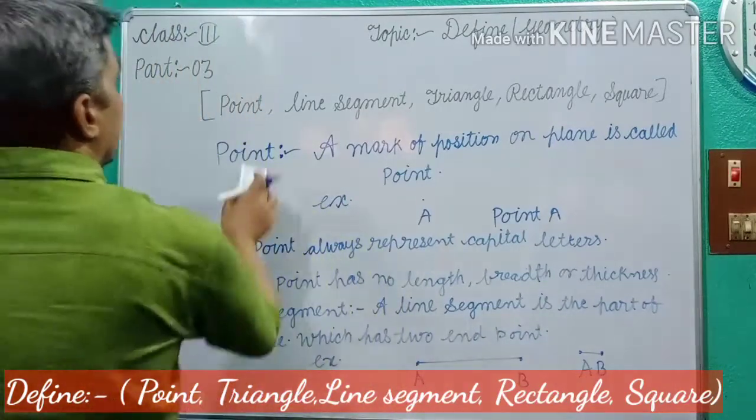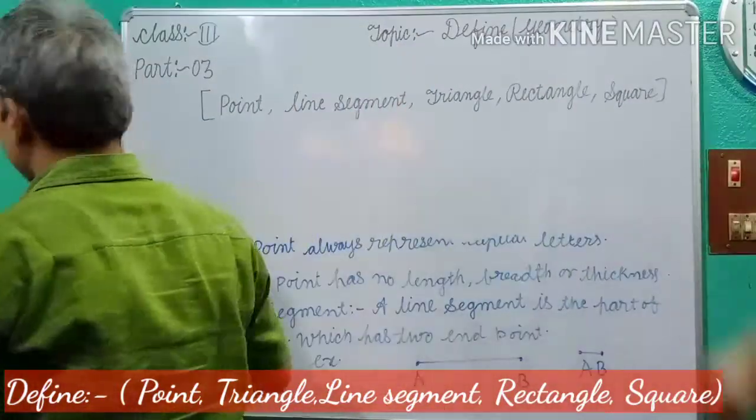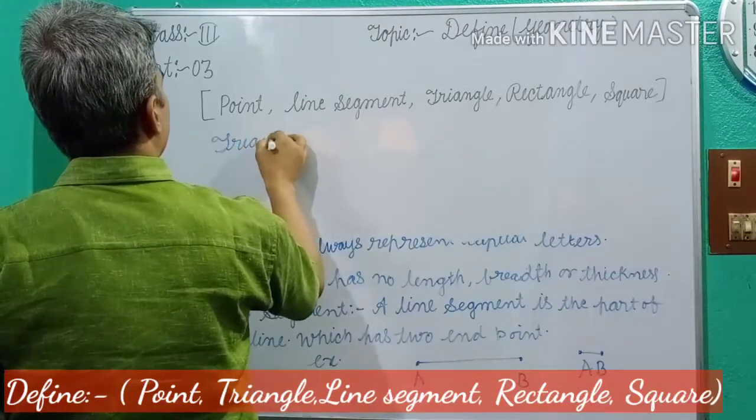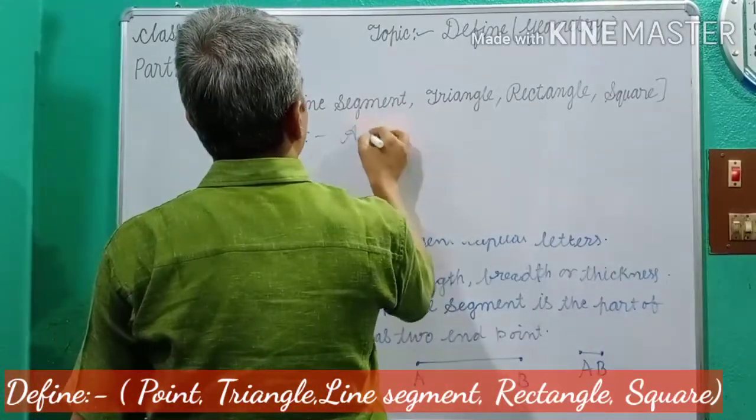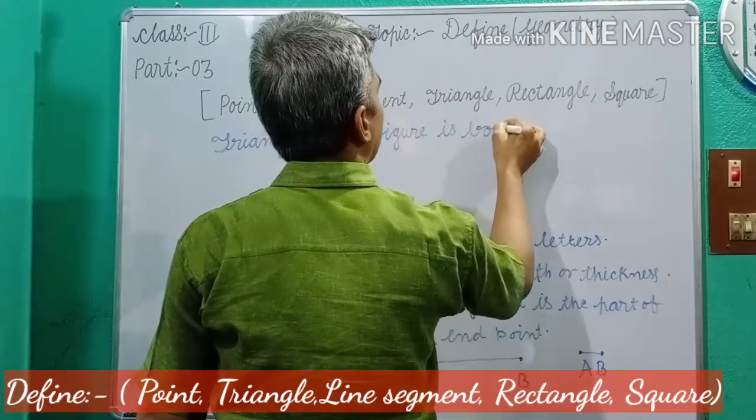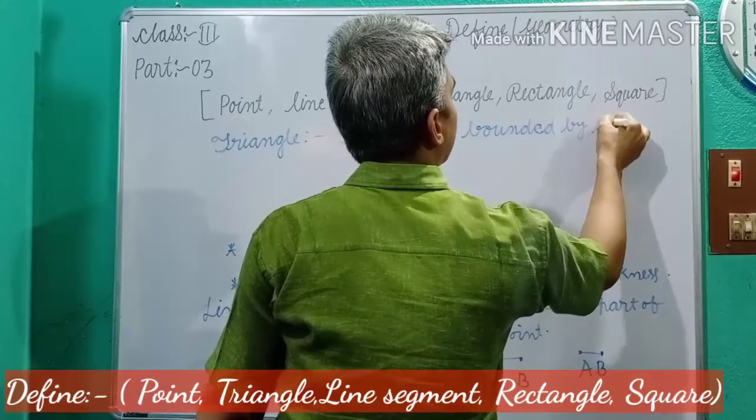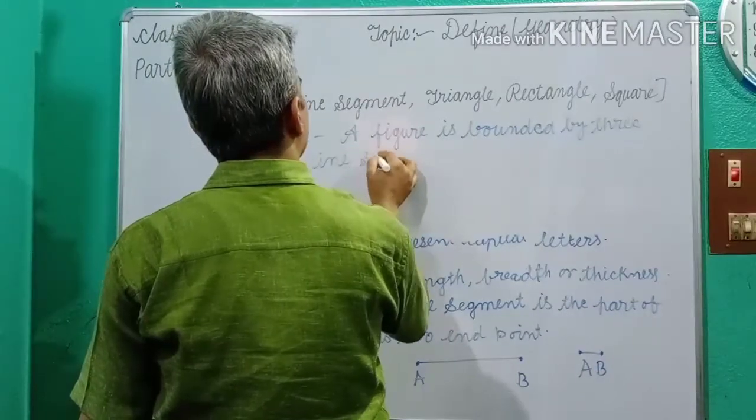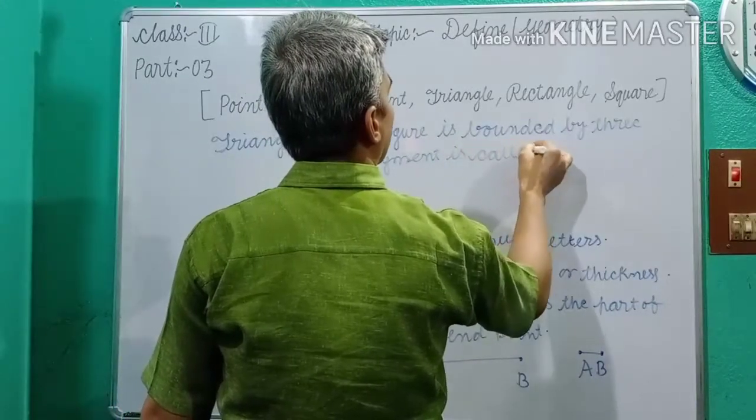Now, triangle. A figure is bounded by three line segments is called triangle.